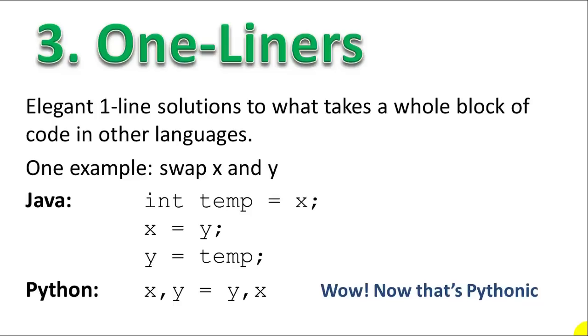So here's an example where, just to exchange the value of X and Y variables in Java, it takes three lines of code. First, you have to declare an int or a string or whatever type the variable X is. You have to declare a temp variable. You have to copy X into the temp variable. Then you move Y into X. And then you move this temp variable back into Y.